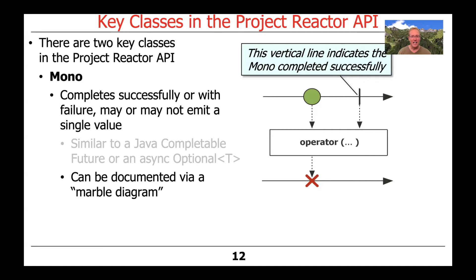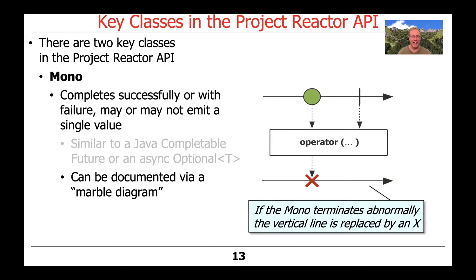This vertical line indicates that the Mono has completed successfully. And if the Mono terminates abnormally, then the vertical line is replaced by an X, as shown in this part of the Marble Diagram.